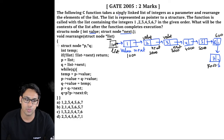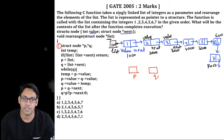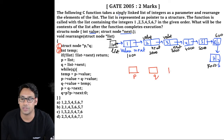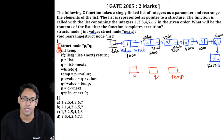In line 1 of the function, two pointers p and q are initialized. In line 2, a temporary variable temp is declared — this is not a pointer, it is an integer that will store an integer number.